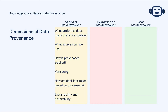In the first category, related to the content of provenance, we can define provenance in terms of what the actual provenance object is, what it's about, what sources or entities can be used to create a new attribution for provenance, what's the process by which provenance is tracked, how versioning works for provenance objects, whether we can capture why and how a particular decision is made, and whether automated systems that serve up answers are explainable and checkable.